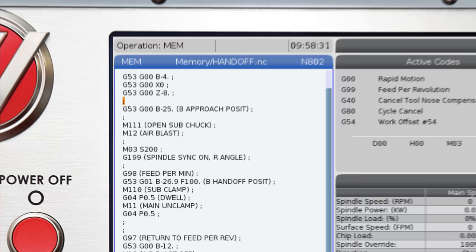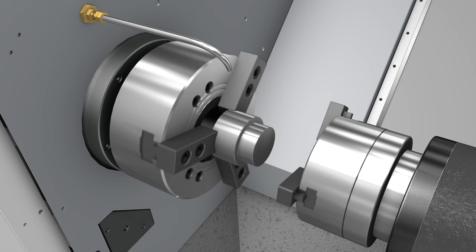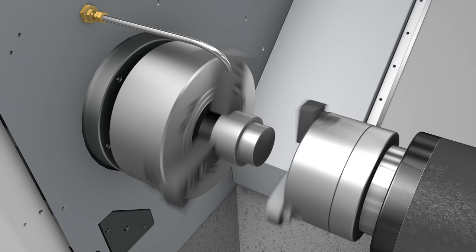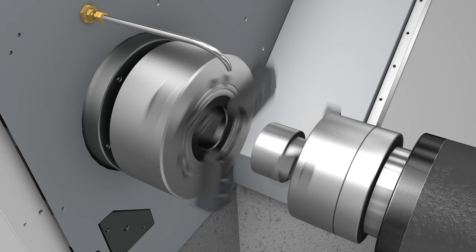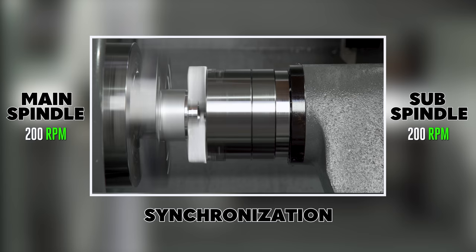We're gonna throw an M12 into our program to turn on this air blast. That's gonna blow the chips off the chuck. And also on top of that, we're gonna make sure that those chuck jaws are spinning as we make the hand-off, because as they spin, they're throwing all those chips out of the way. And if we're clamped on a part with both spindles, then they better be turning at the same RPMs. We call this synchronization.